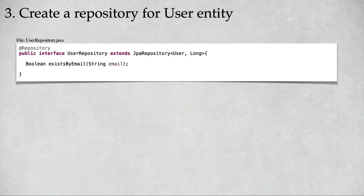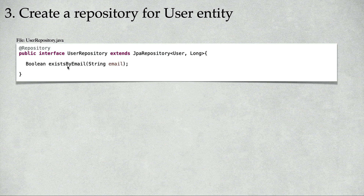The third step is to create the repository for the User entity. We'll create an interface UserRepository that extends JpaRepository. Inside it, we'll define a query method to check the existence of the given email address. It starts with existsByEmail, takes the email address as a parameter, and returns a boolean. If it returns true, the email is already in the database; if false, it is not.